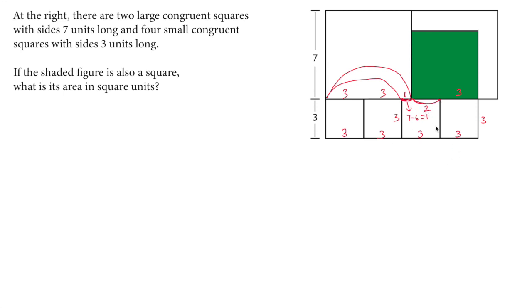So that will be two units. And therefore the green square side length will be five and the area of this green square will be five times five equals 25 square units. I hope you enjoyed this solution.